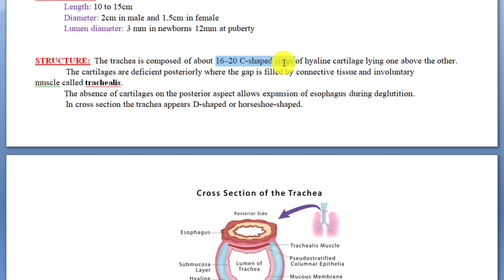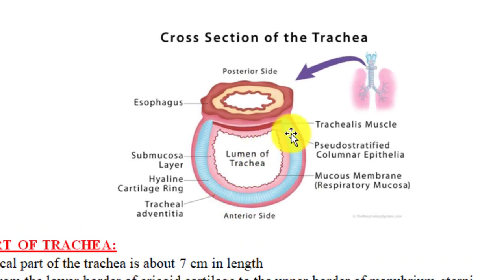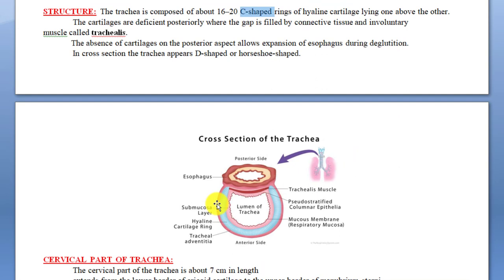Regarding the structure of the trachea: the trachea is composed of 16 to 20 C-shaped rings of hyaline cartilage. The cartilage present in the trachea is hyaline cartilage. They are C-shaped, meaning they are not complete rings — the ring starts on one side and does not meet on the other side. The cartilages are deficient posteriorly, and that gap is filled by connective tissue and involuntary muscles called the trachealis muscle.